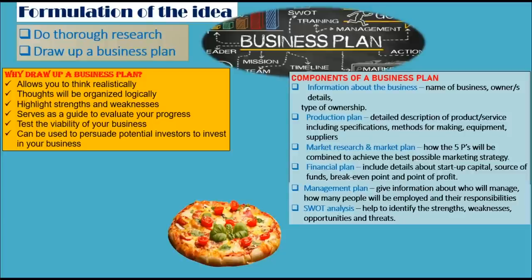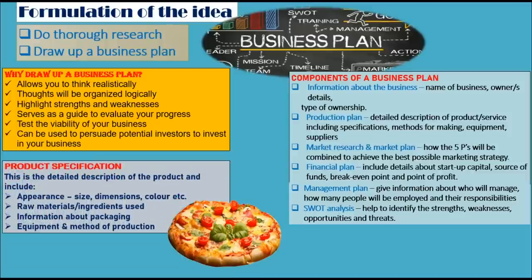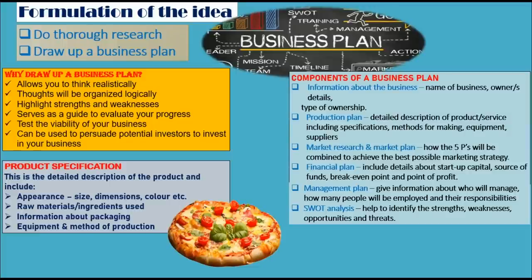Product specification is a detailed description of the product. It includes appearance — for example, using a pizza, they might specify the diameter must be 23 centimetres — dimensions, colours or flavours, raw materials or ingredients to be used, how it's going to be made, information about packaging, equipment and method of production. This is a written description of the product including all of those details.